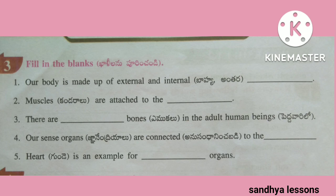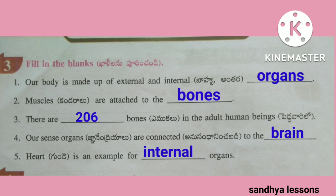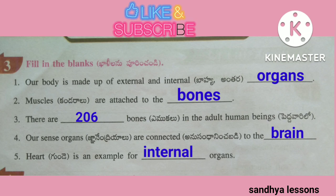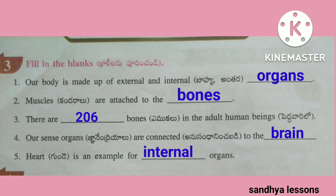Third, fill in the blanks. Our body is made up of external and internal organs. Muscles are attached to the bones. There are 206 bones in adult human beings. Our sense organs are connected to the brain. Heart is an example of internal organs.